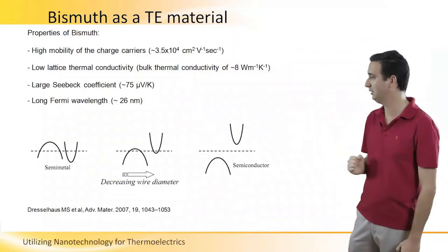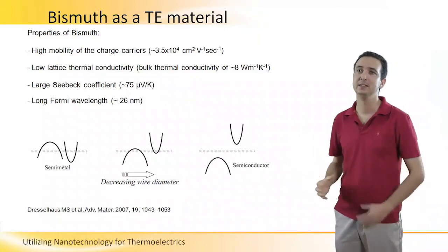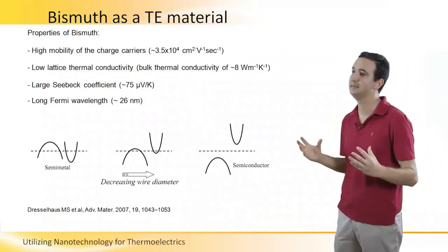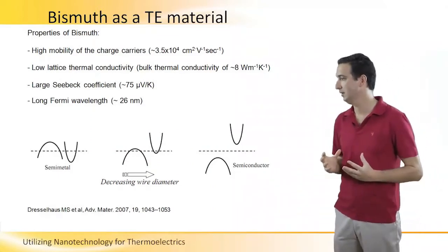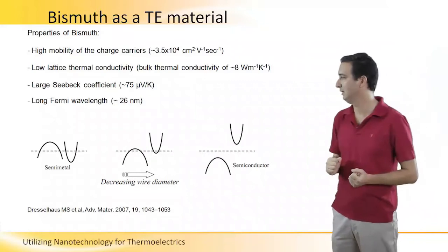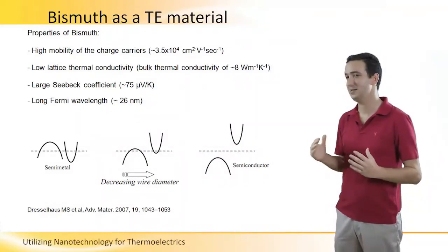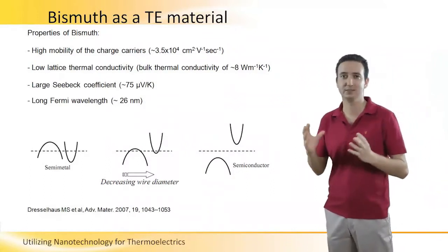It is actually very low when you compare it to other materials, and the main reason for that is that Bismuth is the heaviest atom except for the radioactive elements. And this very high mass leads to a very low lattice thermal conductivity.